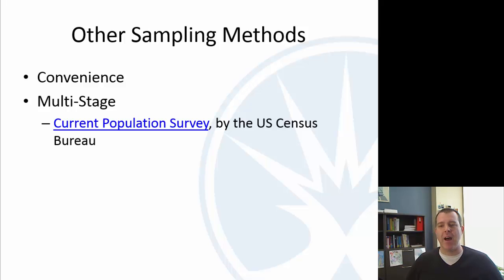A multi-stage is just what you think is when you've got multiple sampling strategies happening within the same sample. So, the current population survey, I'm trying to remember exactly how this works. I am not going to remember it. I've got a link to it. I'll see if I can put that link below here.